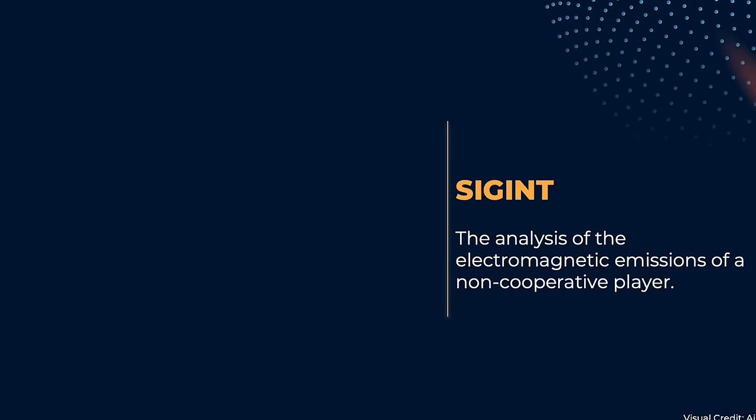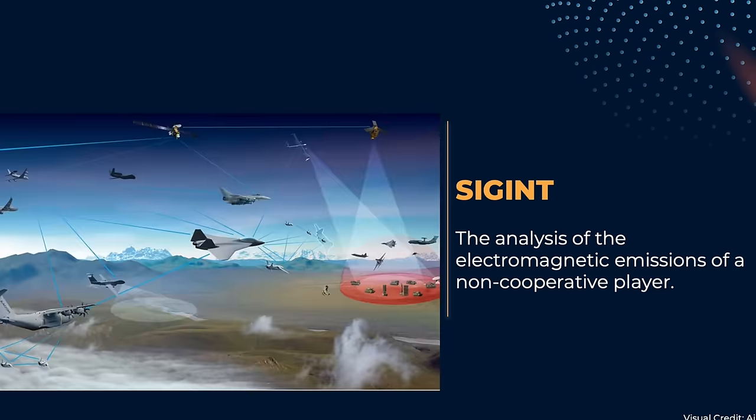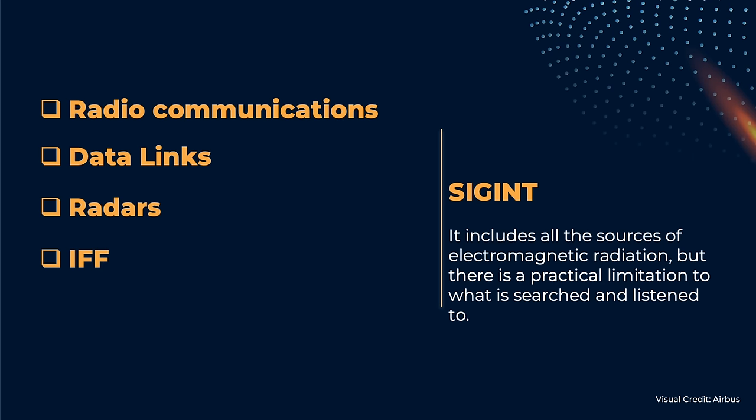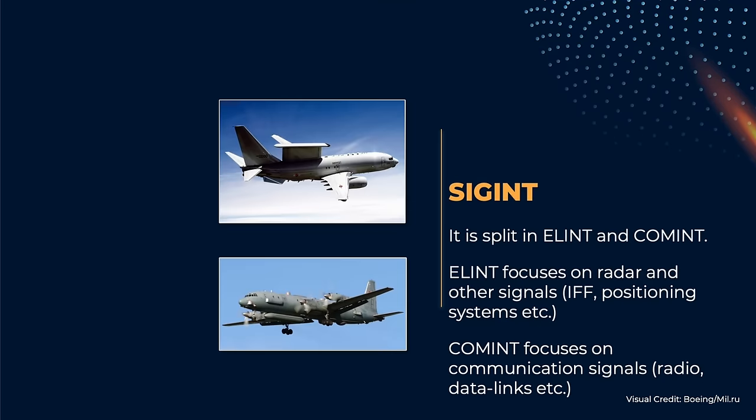SIGINT is the abbreviation of Signal Intelligence, and it is the analysis of the signals emitted by a non-cooperative player. It is a form of intelligence gathering, and here we are interested about the signal emitted in the electromagnetic spectrum by radio, radars, data links, and other forms of communication. It is usually divided in ELINT, which stands for Electronic Intelligence, and COMMINT, that stands for Communications Intelligence.